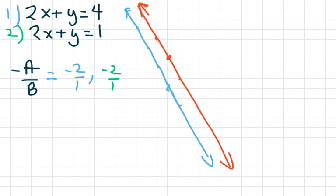they have a different y-intercept, so c over b. So for the first one, that's going to be 4 over 1.